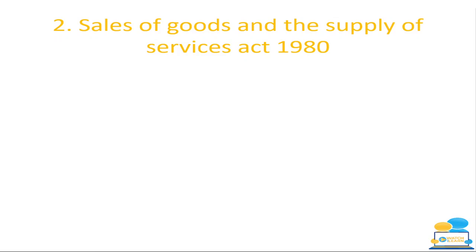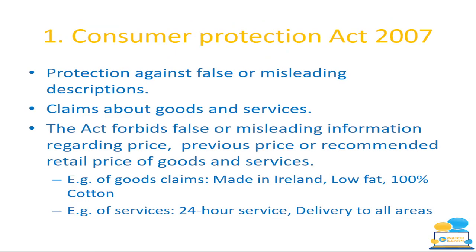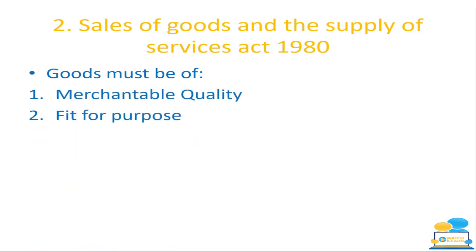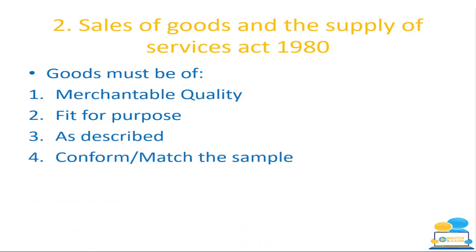The Sale of Goods and Supply of Services Act 1980 is more detailed than the Consumer Protection Act 2007, so it comes up more frequently. Under this act, goods must be of merchantable quality, fit for purpose, as described, and conform or match the sample. We're going to look at these in more detail. When talking about this act, you must state it, then say goods must be of merchantable quality, explain what that means, and give an example — then the same for fit for purpose, as described, and conform to sample.